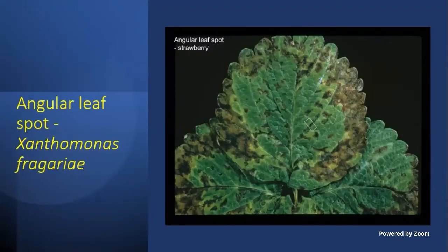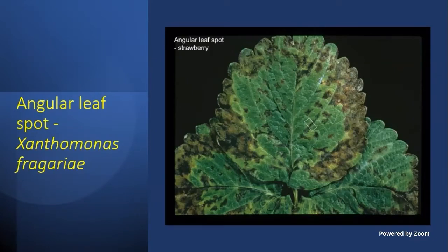The next disease is angular leaf spot, and this is a bacterial disease — the only bacterial disease we'll talk about today. It gets its name from the very sharp angles to the lesions caused by the pathogen. The bacteria get inside the leaf tissue but have a hard time crossing the major veins, so you get these sharp angular lesions. It's fairly easy to pick up in the field once you get used to seeing it. Typically it's a cooler weather disease — likes it wet like most of these diseases, but it's a cooler weather pathogen.